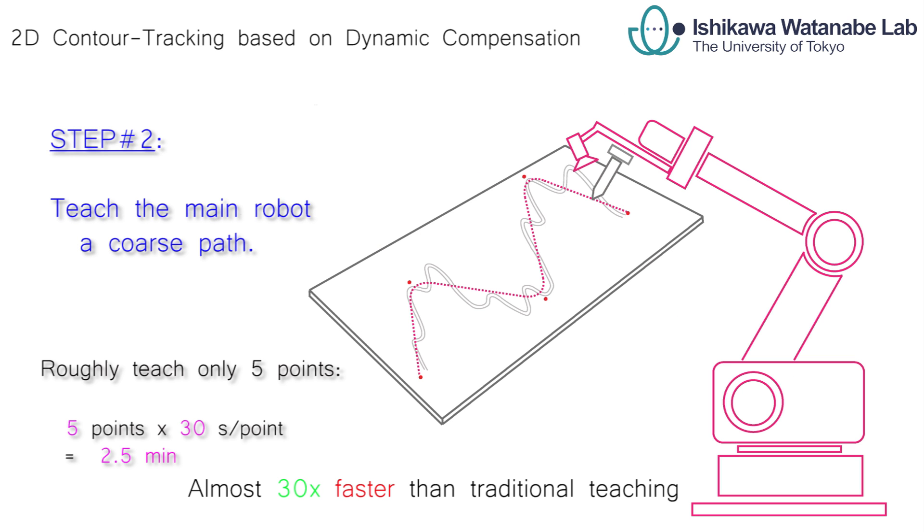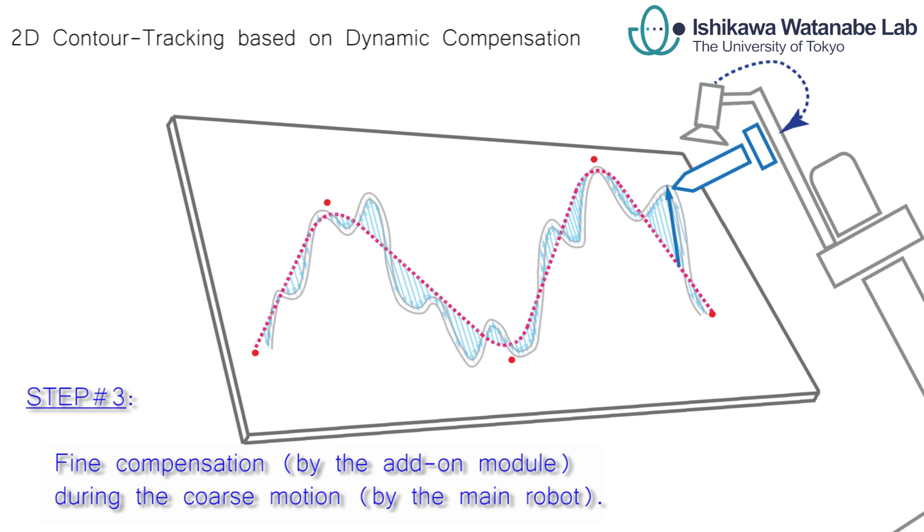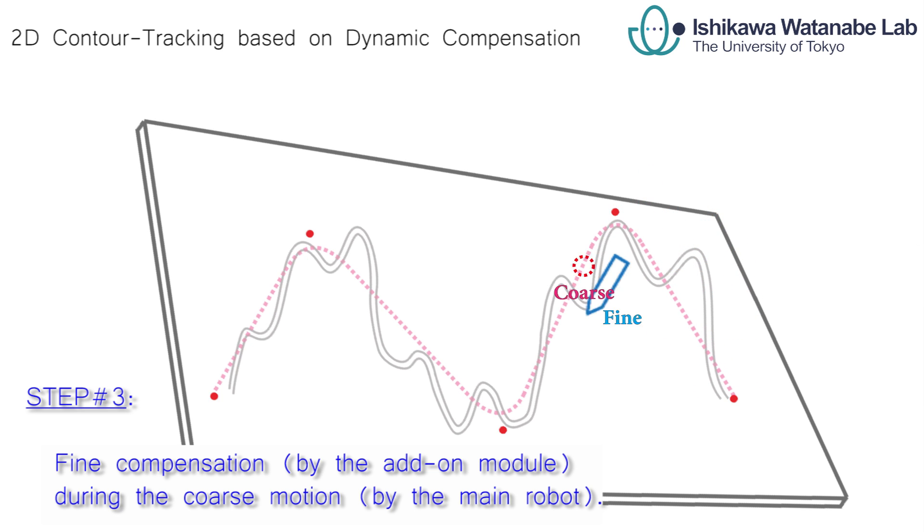The errors between the coarse path and the target path are then dynamically compensated by the high-speed robotic module under 1,000 fps visual feedback. As a result, accurate tracking can be achieved with fast speed.